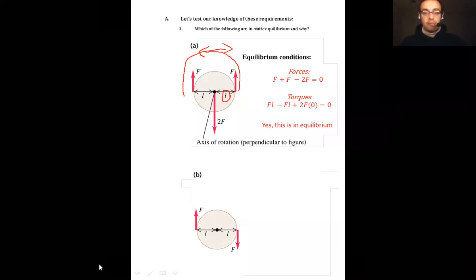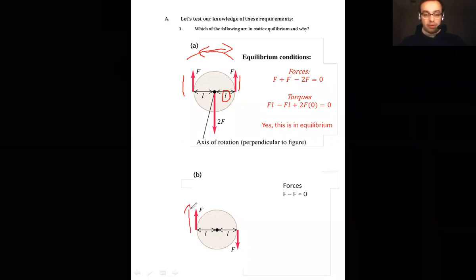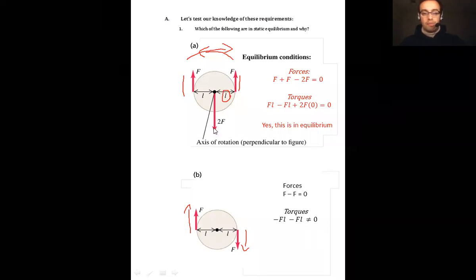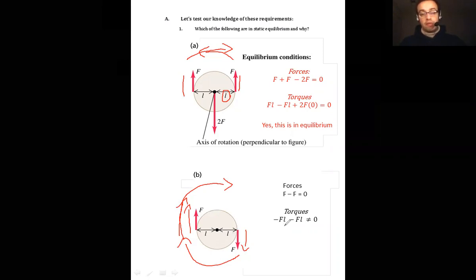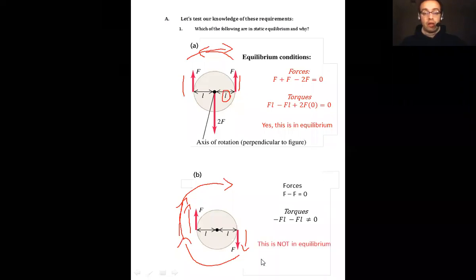In the second example, one force points up and one points down, so the forces cancel to zero. But what about the torques? Both forces are rotating the wheel in the same clockwise direction — they're additive. So negative FL − FL does not equal zero. The torques do not equal zero, and therefore this is not in equilibrium.